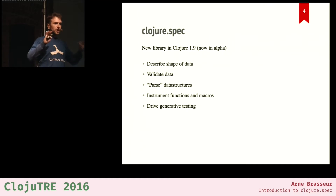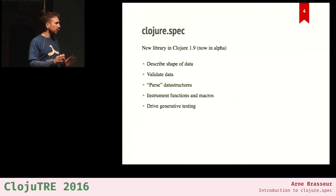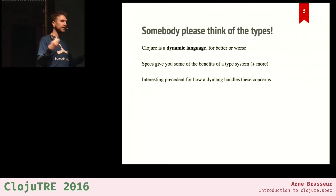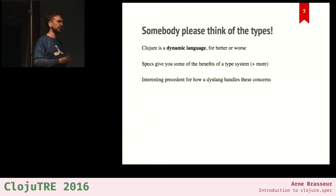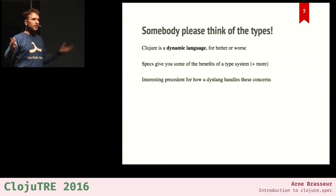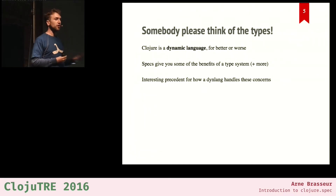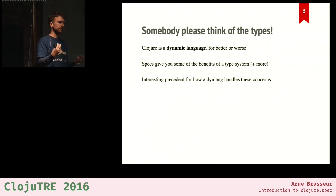When you start talking about Clojure spec, especially if there are programmers in the room coming from Haskell or other statically typed languages, somebody will ask: what about the types? The thing is, Clojure is a dynamic language — that ship has sailed a long time ago. We like it that way; it's a trade-off. But specs give us some of the things that types give us.